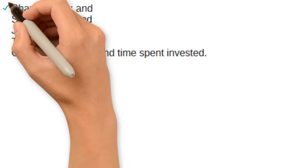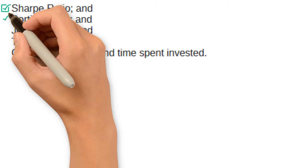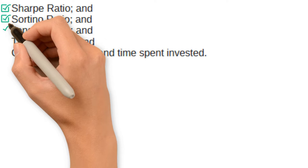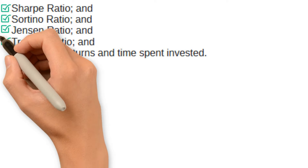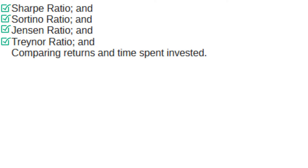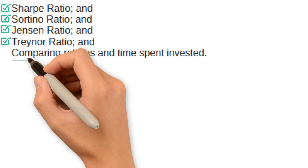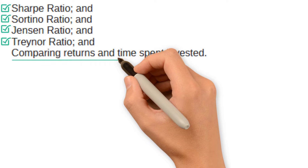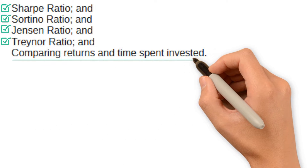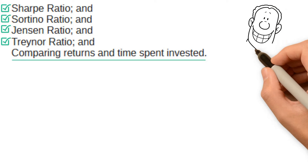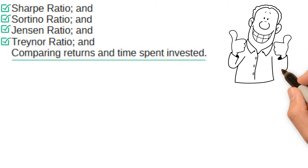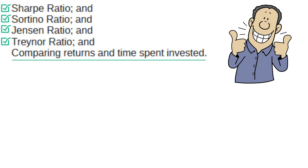We'll cover the Sharpe Ratio, the Sortino Ratio, the Jensen Ratio, the Treynor Ratio, and the simplest method of them all: comparing the returns and the time spent invested. The last one's the best, so make sure you stick to the end.